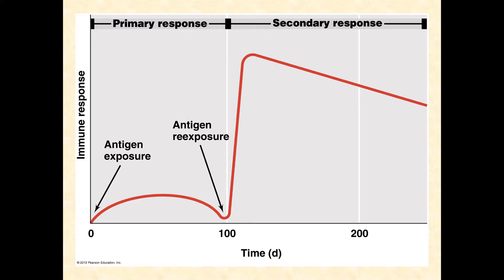If it was a true infection, then at some point that infection was cleared. They show that at a hundred days you're re-exposed to the antigen — hypothetically at a hundred days — and look at the spike in that secondary response and how slow it is for that secondary response to come back down again.